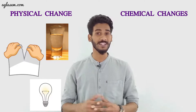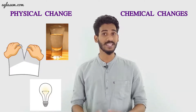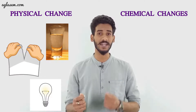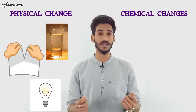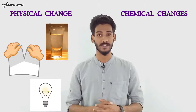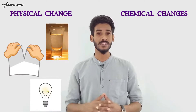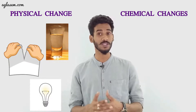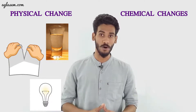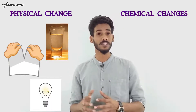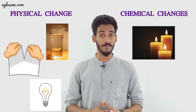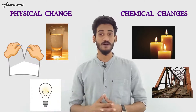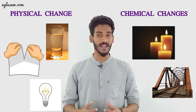Now let's talk about chemical changes. Chemical changes are the changes in which the composition and chemical properties of substances get changed. These changes are permanent and irreversible, and new substances are formed. For example, formation of curd from milk, burning of candle, rusting of iron, etc.